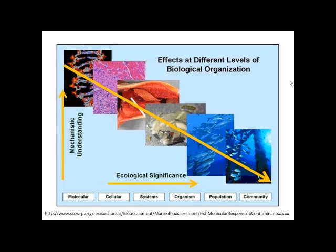On this graph, the y-axis shows mechanistic understanding — at lower levels of organization such as molecules and proteins responding to a contaminant, we gain understanding of how those contaminants actually affect organisms. However, the higher the biological organization we look at, the greater the ecological significance. This is a standard graph that most of you have likely seen.